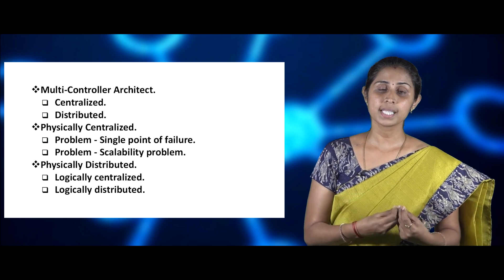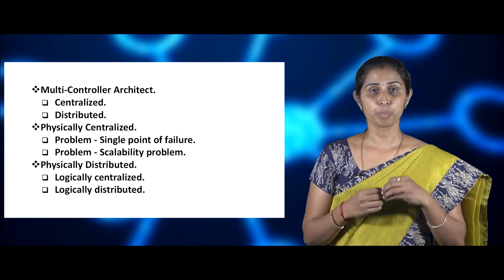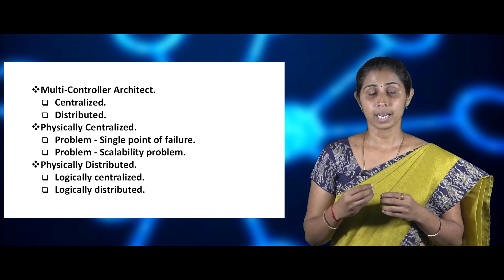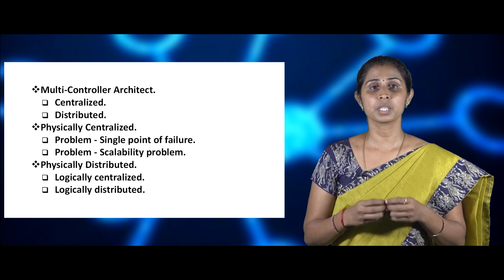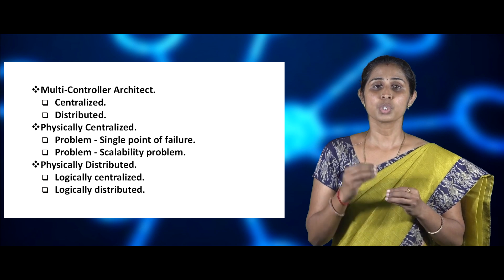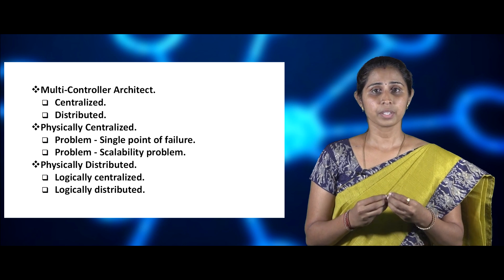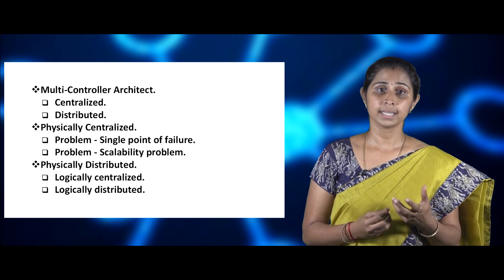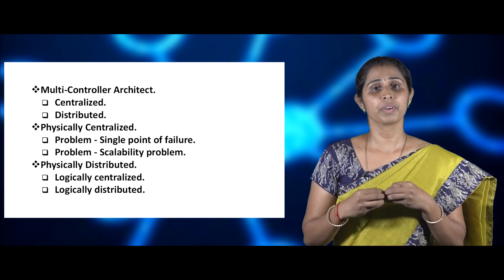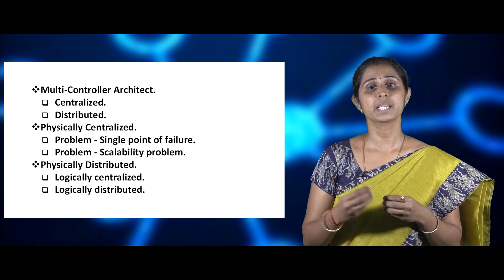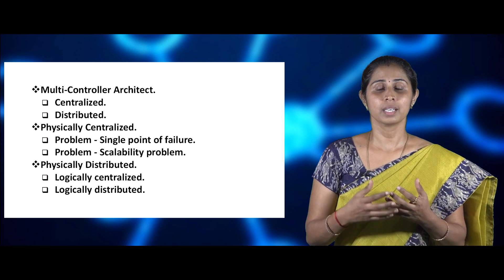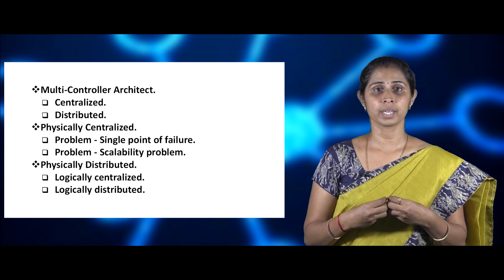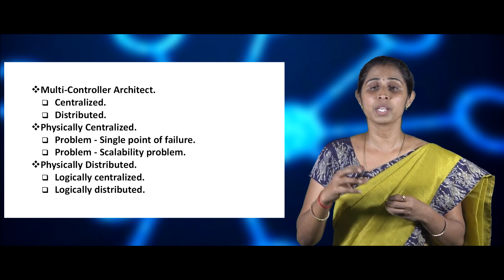A physically distributed architecture can be either logically centralized or logically distributed. Logically centralized means we take advantage of the multi-controller design but always consider there is a single controller — we distribute the workload among multiple controllers, yet for the underlying layer it appears as one controller commanding the whole network. Logically distributed architecture, on the other hand, gives several controllers several responsibilities inside the network. In a logically distributed architecture, controllers are both physically and logically distributed, and every controller has just a view of the domain it is responsible for and takes decisions for it, unlike logically centralized design where each controller makes decisions based on the global network view.